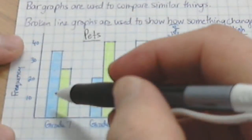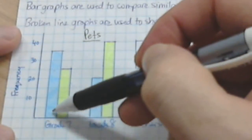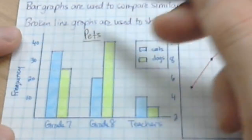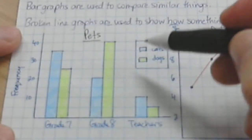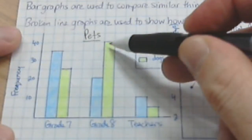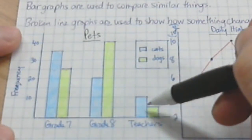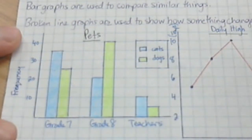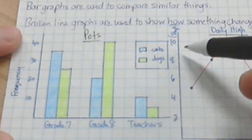So in this case, it's the number of pets. So you know, grade 7 has 35 cats compared to 25 dogs. Grade 8 has 20 cats compared to 40 dogs, and the teachers have 10 cats compared to 5 dogs. And so oftentimes a legend is appropriate.